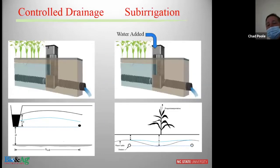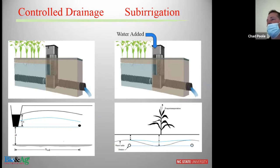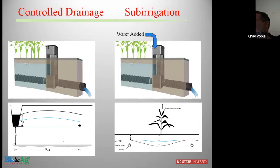Controlled drainage and sub-irrigation — whether you have an in-canal flashboard riser or a tile structure — for controlled drainage you put the boards in and manage the water so you've got water available during the dry season to help with crop yield. With sub-irrigation it's the same thing except you can pump water back into the system and actually have a form of irrigation.